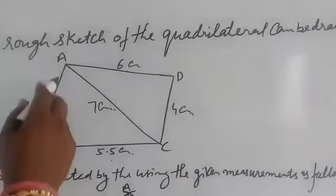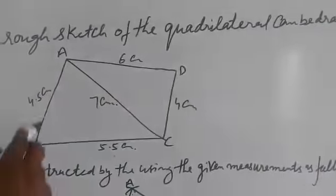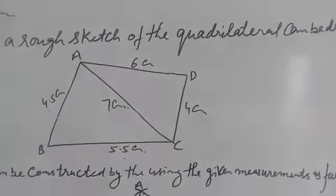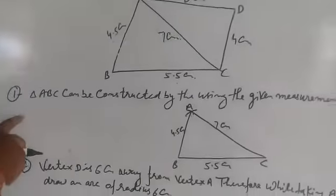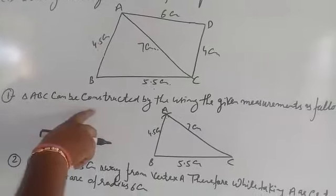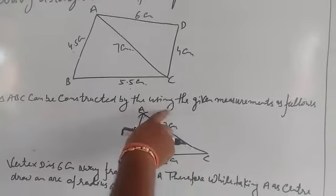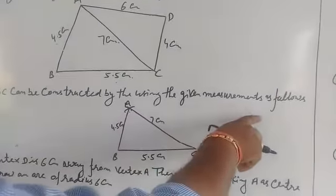AD = 6 cm, and diagonal AC = 7 cm. Triangle ABC can be constructed using the given measurements as follows.